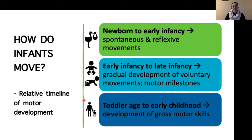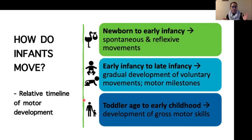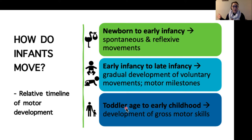So how do infants move? There's a lot of development that happens between birth to one year, and so it's really helpful for us to break infancy down into stages. From newborn to early infancy, about six months, most movements are spontaneous movements and infantile reflexes. From early towards late infancy, about six to twelve months, we start to see a more gradual development of voluntary movements or goal-directed behaviors, and we start to identify different motor milestones that build up to bigger skills developed later in toddlerhood, early childhood, and adolescence.